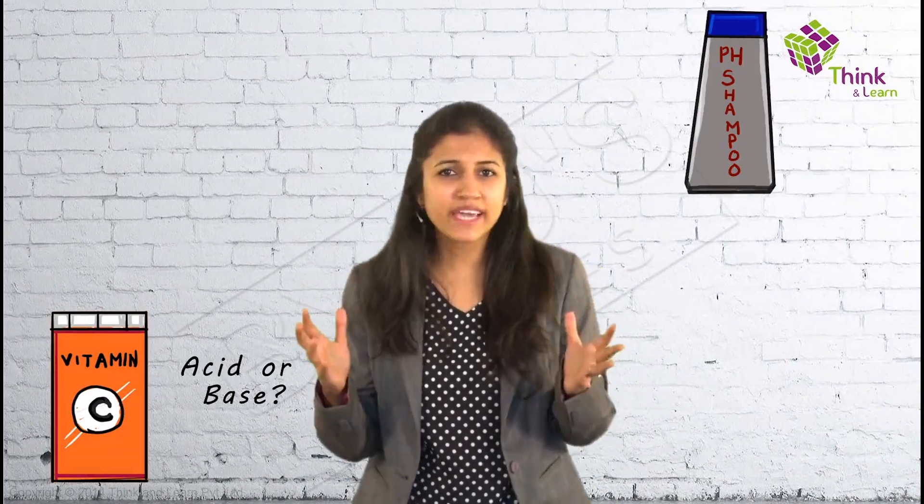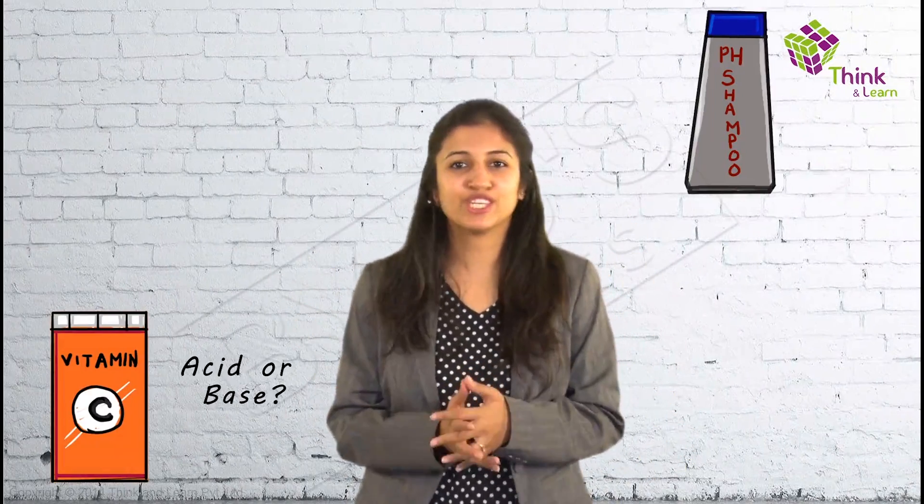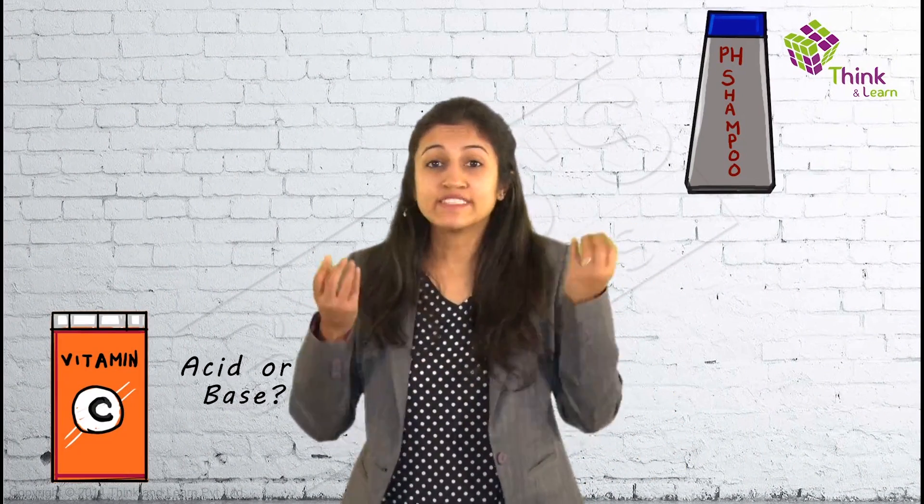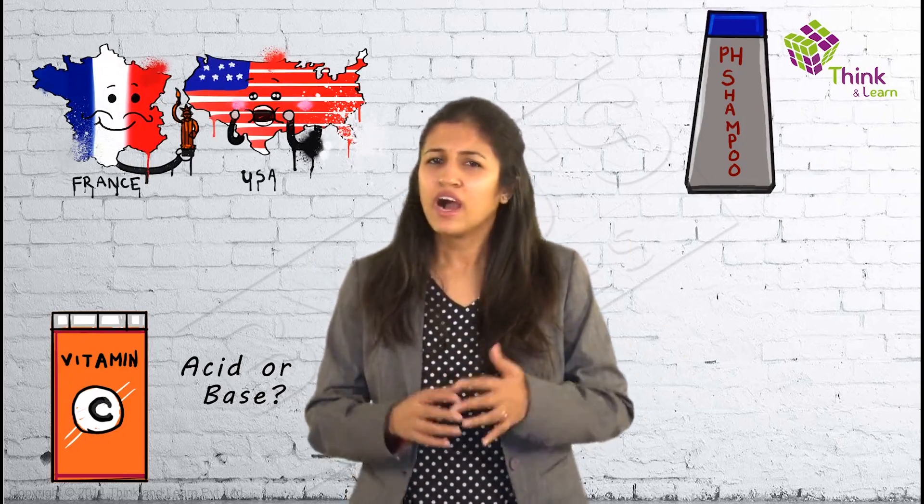What about all this pH balance shampoo that you see in the supermarket? What is the color of the Statue of Liberty — has it always been this color from the time France gifted it to the USA? How do you go about treating a bee sting? What has happened to the Taj Mahal? Are colas really bad for teeth? And what exactly are we tasting when we taste something bitter, sour, or sweet? We will get the answers to all these questions and a lot more by the time you finish this chapter.